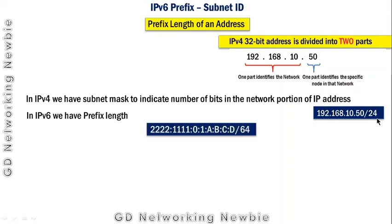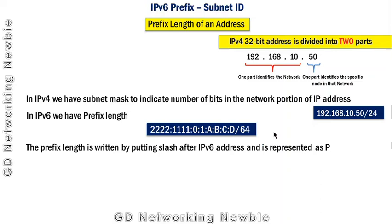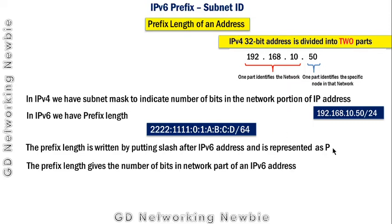For example, we have this IPv6 address written in hexadecimal notation, separated by colon signs. The slash 64 is the prefix length, written by placing a slash after the IPv6 address and is represented as p. The prefix length gives us the number of bits in the network portion of an IPv6 address.